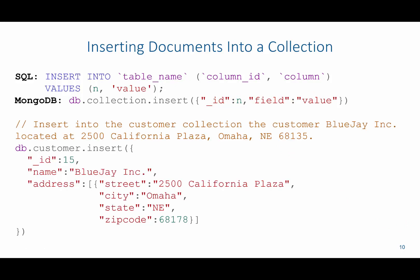For example, if we were to insert into the customer collection the customer BlueJ Ink with the following address, we'd say db.customer.insert, then open the parentheses, open the curly bracket, and close the curly bracket at the end. Then we're going to have each column: id as 15, name as BlueJ Ink.